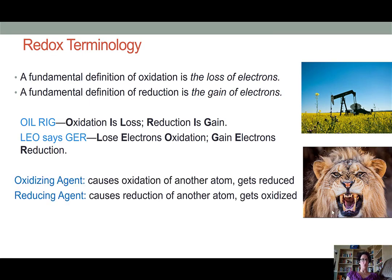This brings us to two other terms, the oxidizing agent and the reducing agent. An oxidizing agent is an element that causes another atom to become oxidized. So if it's causing one atom to become oxidized, it means it's causing that atom to lose electrons.